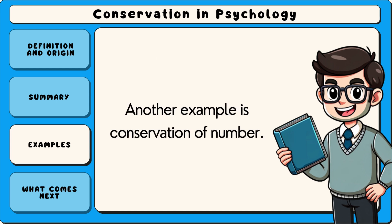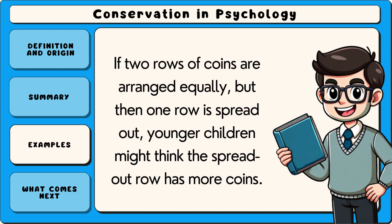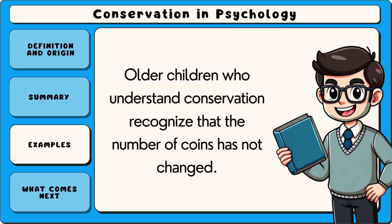Another example is conservation of number. If two rows of coins are arranged equally, but then one row is spread out, younger children might think the spread-out row has more coins. Older children who understand conservation recognise that the number of coins has not changed.